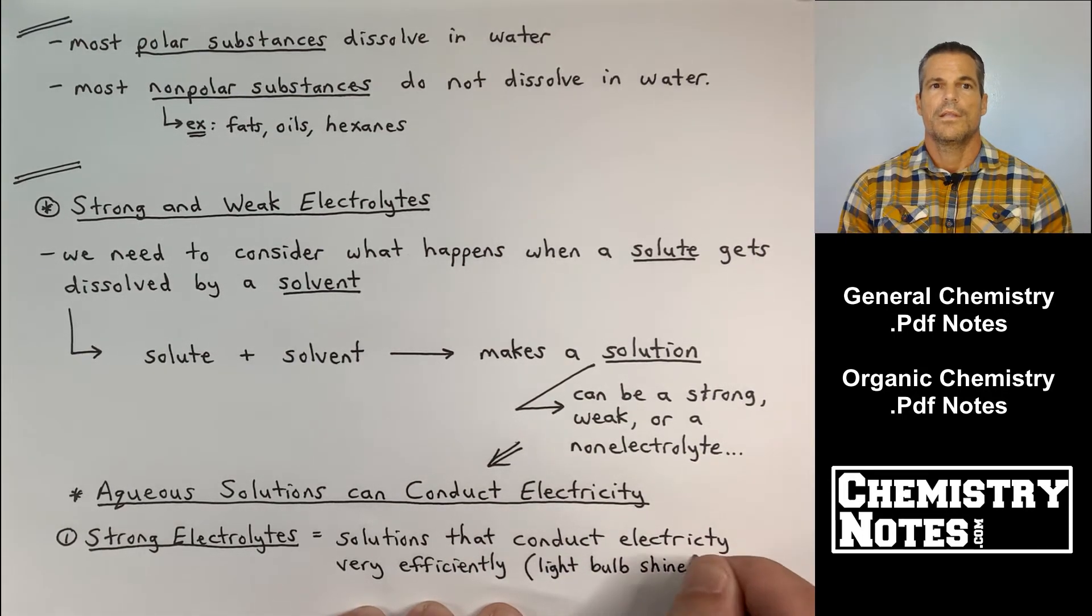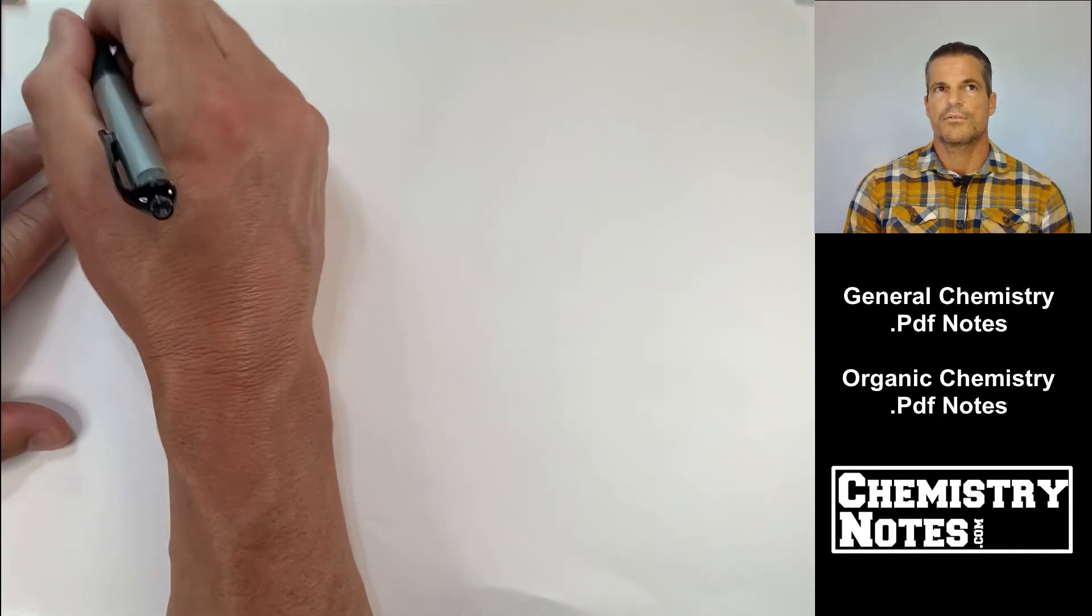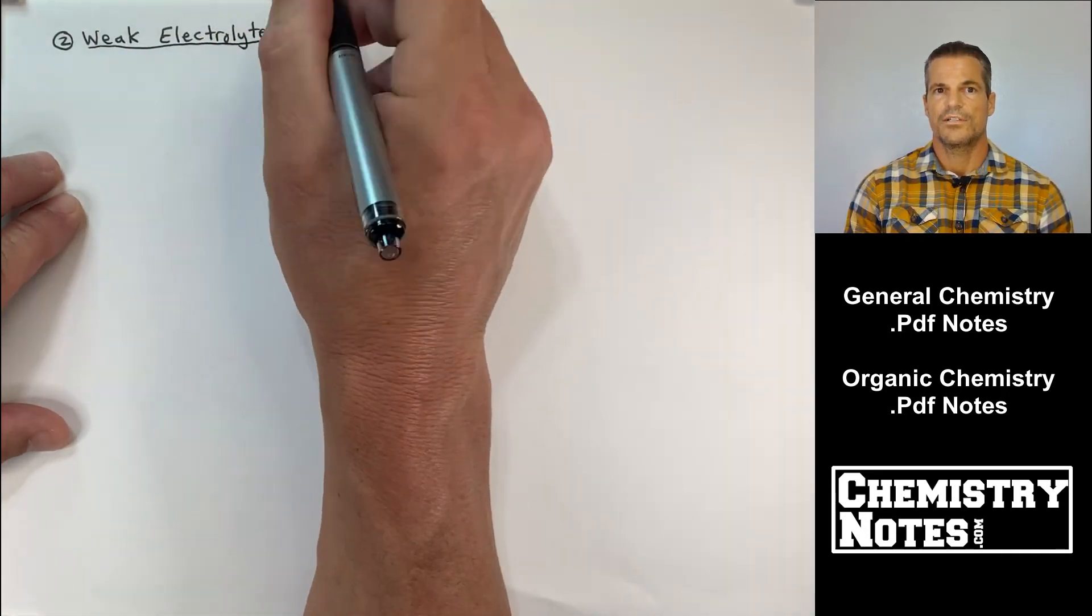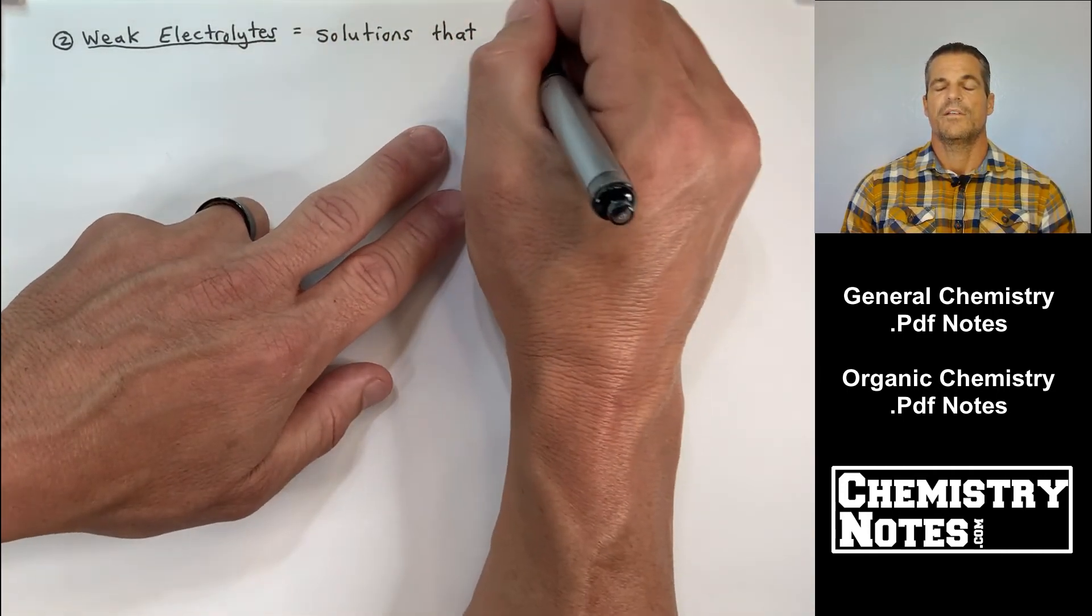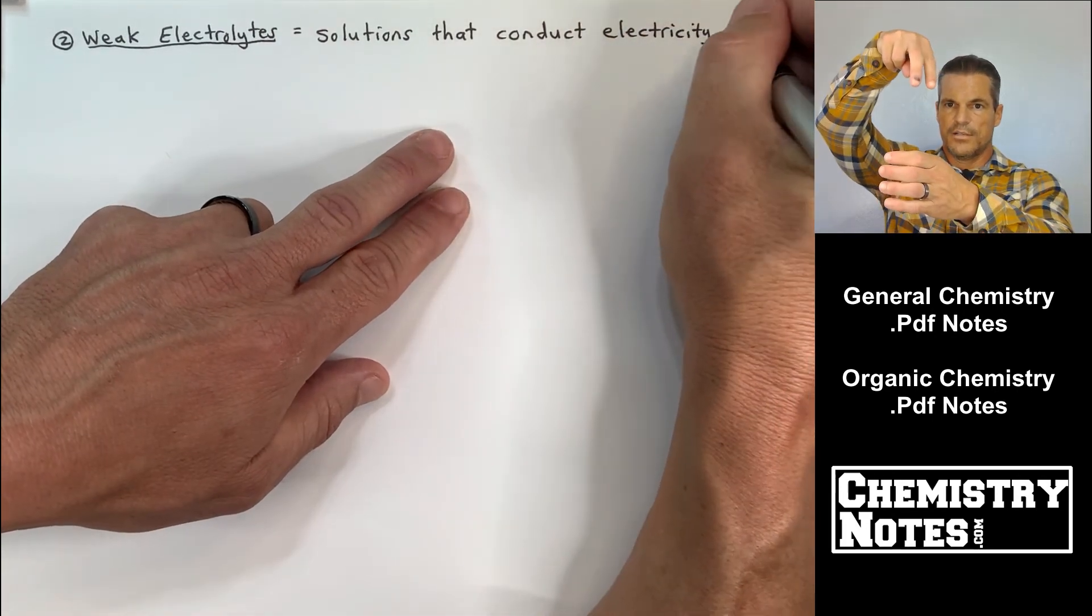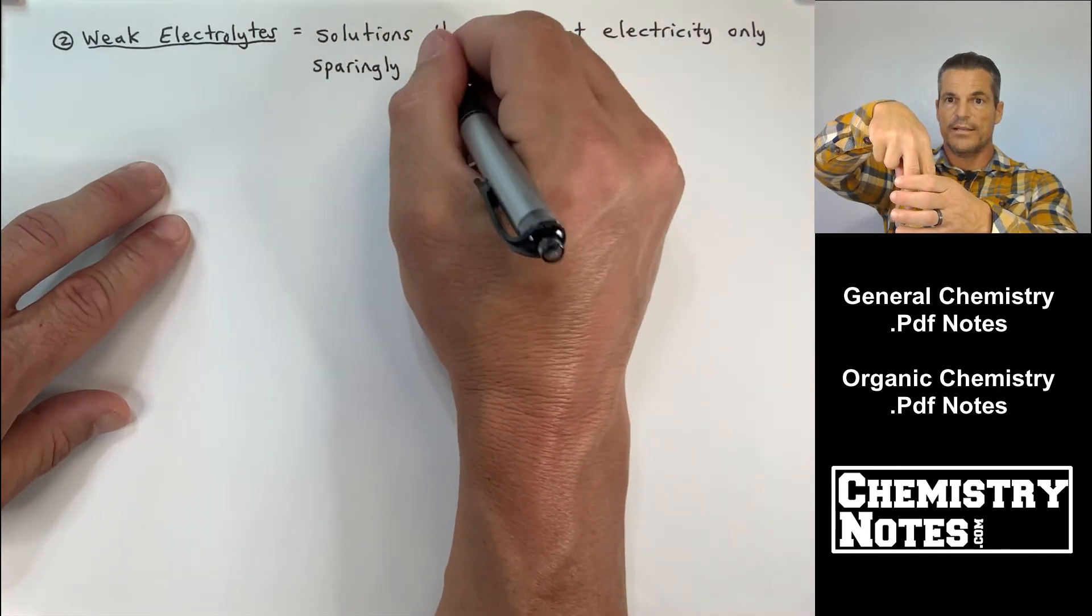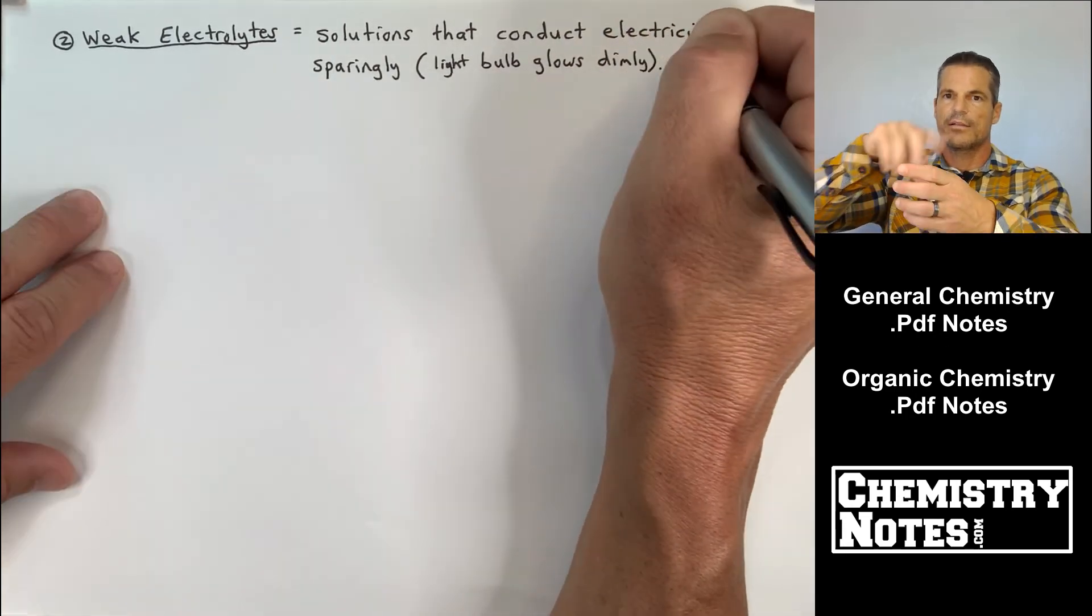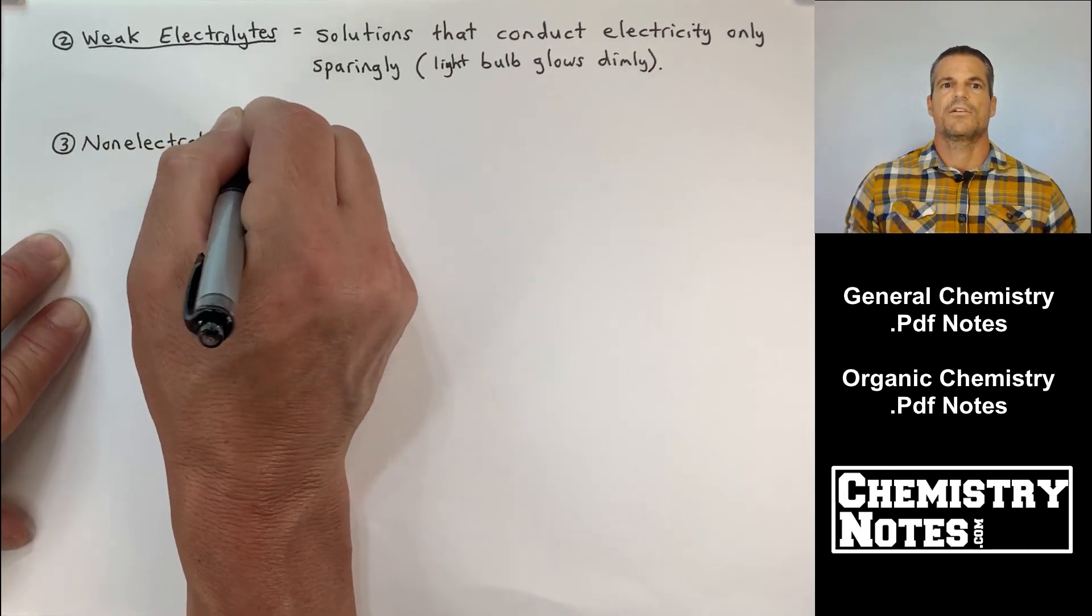Now weak electrolytes, they conduct electricity but they only conduct electricity to a certain extent. So weak electrolytes are solutions that conduct electricity only sparingly. In other words, if you had a light bulb with the two electrodes and you stuck the light fixture into, or the light, the two probes into a weakly electrolytic solution, the bulb would only light a little bit, a dim light because there's not as many charge carriers or ions completing that circuit.